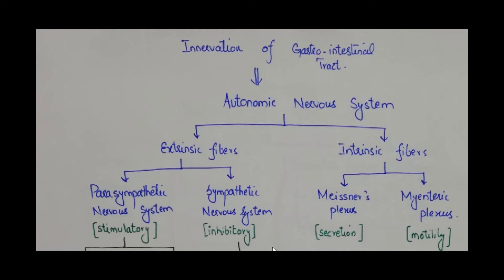Today we are going to talk about innervation of gastrointestinal tract. It is primarily controlled by the autonomic nervous system which is further divided into extrinsic part and intrinsic part.